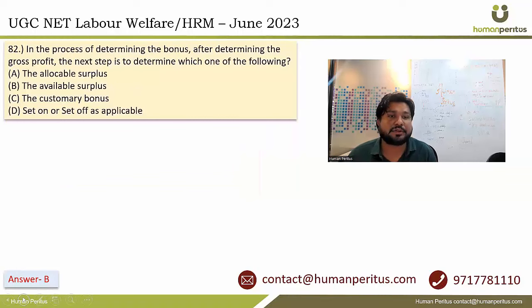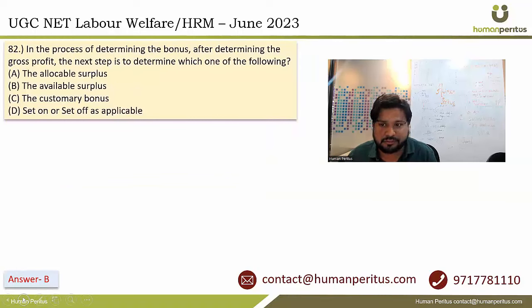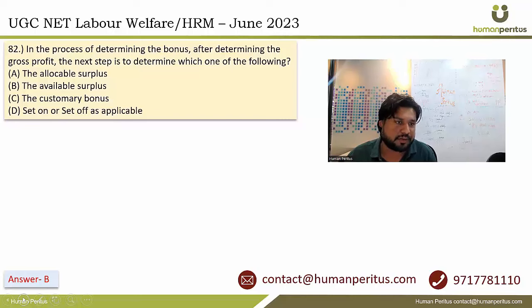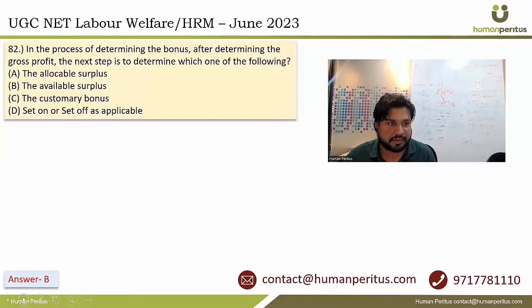In the process of determining bonus, after determining gross profit, the next step is to determine the available surplus, and then allocable surplus. Option B is the correct answer.